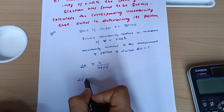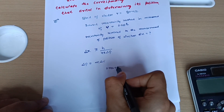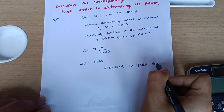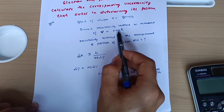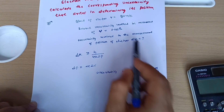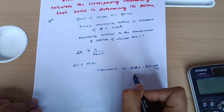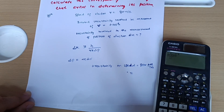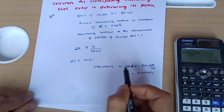Delta p, the uncertainty in momentum, is given by m into delta v, where delta v is the uncertainty in speed. Uncertainty in speed equals 800 multiplied by 0.003 divided by 100, since the uncertainty is 0.003 percent. This gives us delta v equal to 0.024 meters per second.